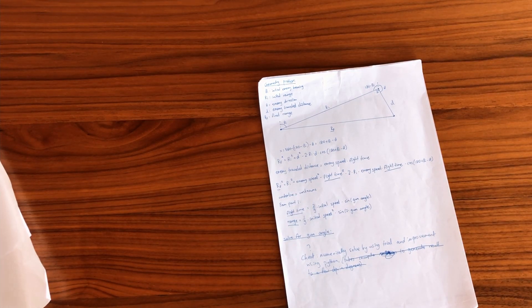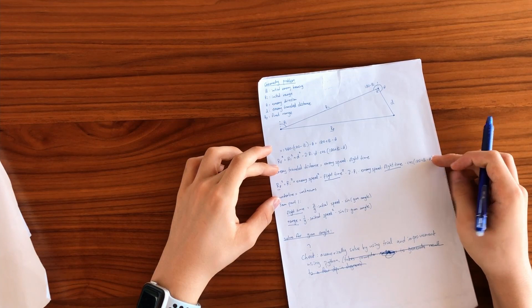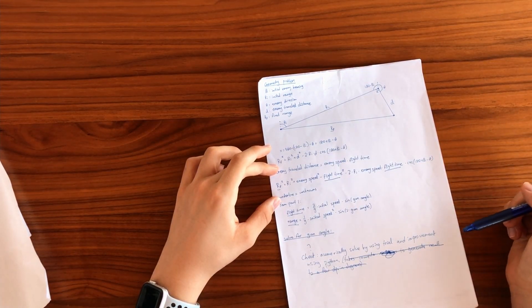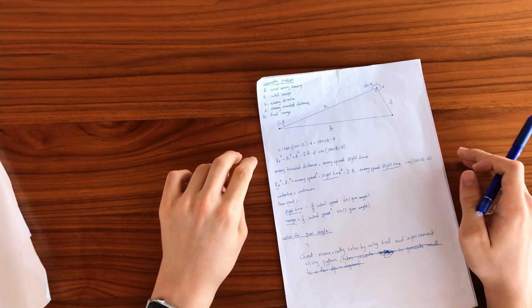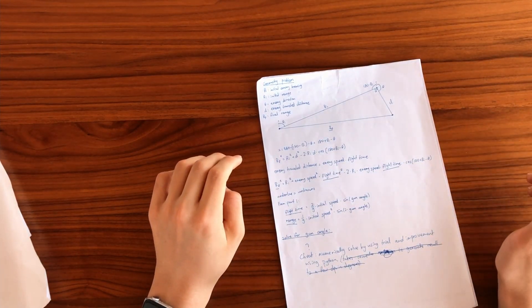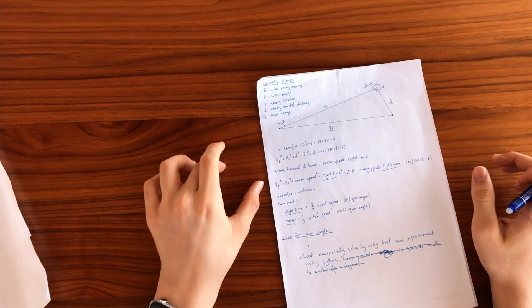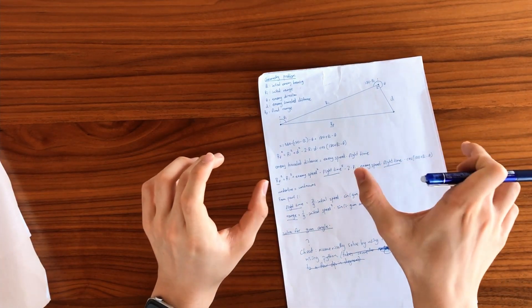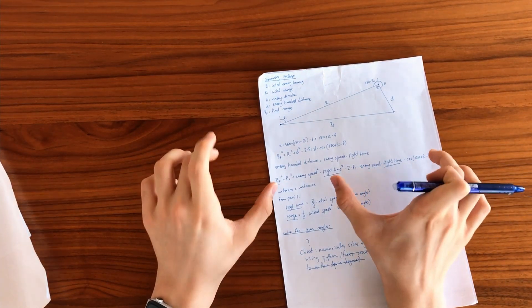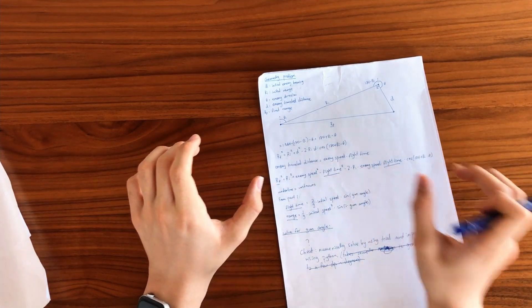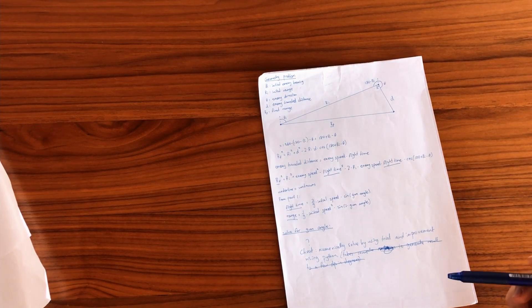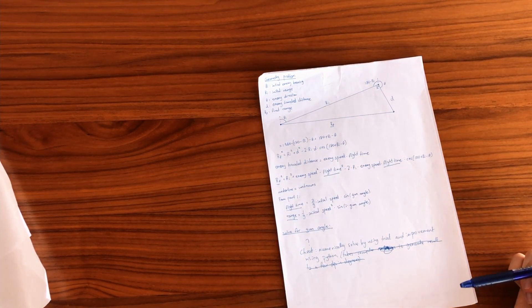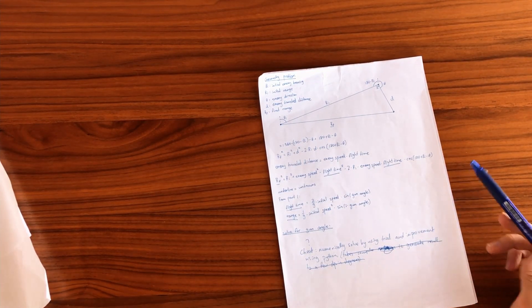And instead, since I have this equation, I can use trial and error inside code, inside Python, on the microcontroller, to try different values of the gun angle and see which values cause the left-hand side to equal the right-hand side, right? Because that's the final goal. You're trying to find a value for which the two sides have as small difference as possible. That's the whole point of having an equal sign. So that will be done by trial and improvement using Python.